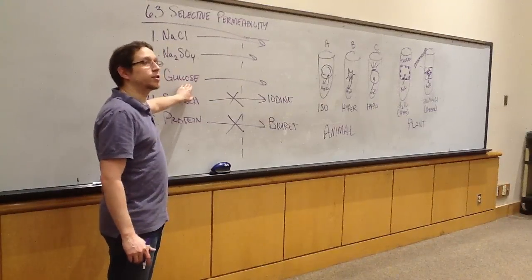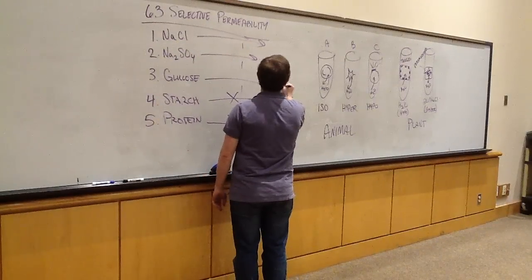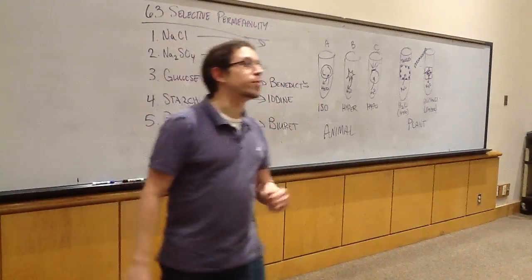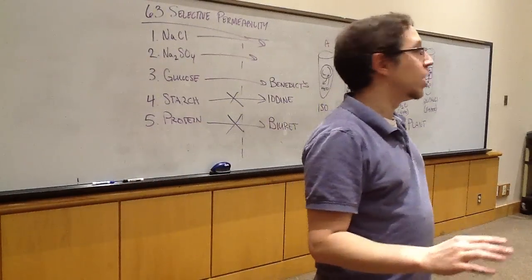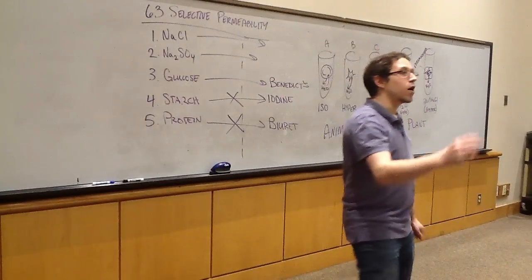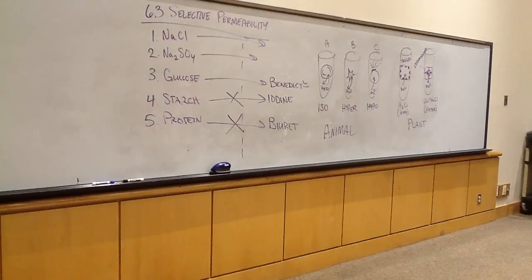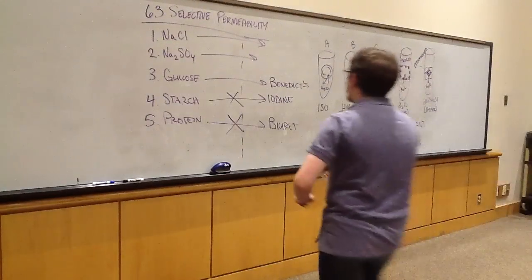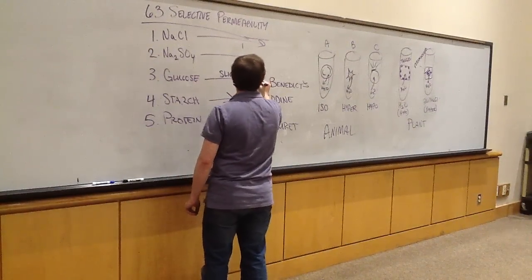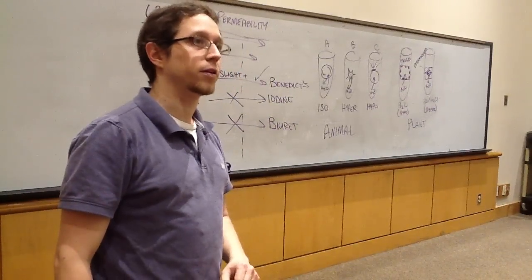We tested for glucose. What solution did we use to test for glucose? Benedict's. What's the final step in Benedict's to make it develop? Boil. With the glucose, what most of you probably saw was not a full-fledged positive. You probably saw it turn the Benedict's kind of a nasty greenish color, maybe with a brown tinge around the sides. We call that a slight positive. It does mean the glucose was moving out of the bag and into the beaker.